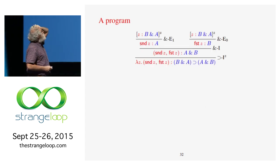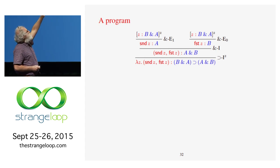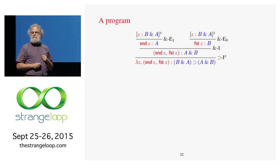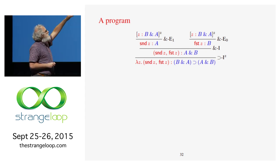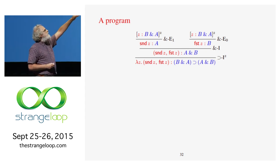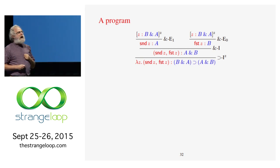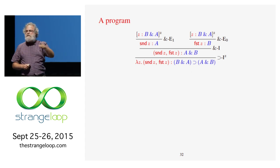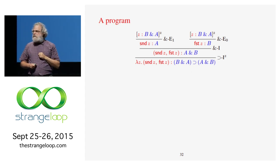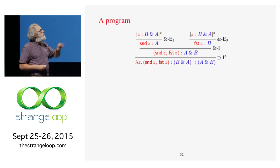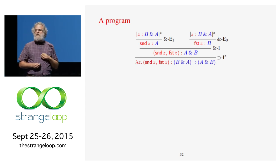Here's an example program: lambda z, return the pair (second of z, first of z). What does this do? It swaps the elements of the pair. Its type is: take a B-A pair and return an A-B pair. At this point I'd like you to all reach under your seats — you should find some rose-colored glasses. Please put them on. You will then only see the blue bits and not the red bits, and that should look kind of familiar.